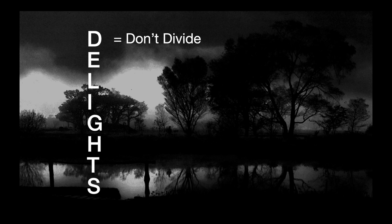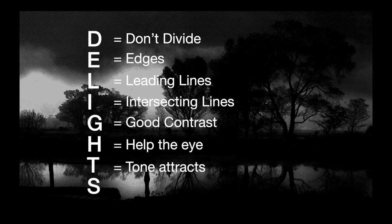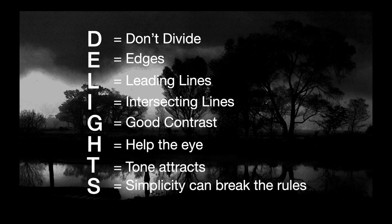Let me quickly describe them. D means don't divide. E is for edges. L is for leading lines. I is for intersecting lines. G is for good contrast. H — help the eye. T — tone attracts. And S — simplicity can break the rules. It sounds like a lot to remember, but I'm going to give you a link where you can download a cheat sheet to use when you're out taking photographs, and very soon you'll remember this acronym and it will jog your memory as you're setting up your shot.